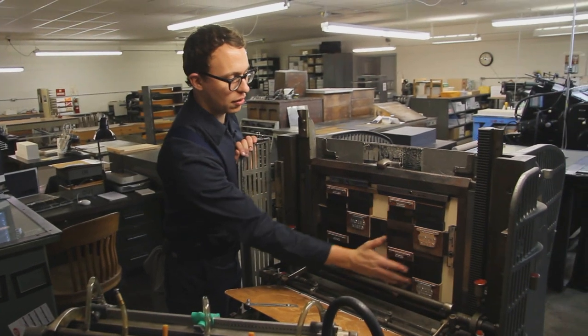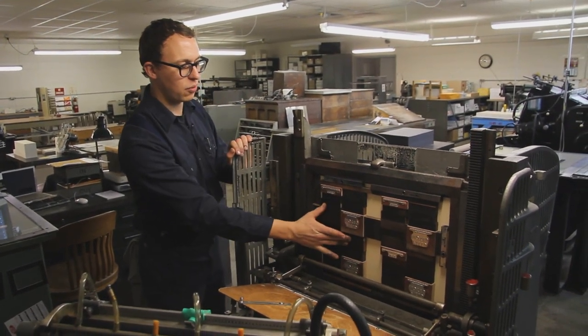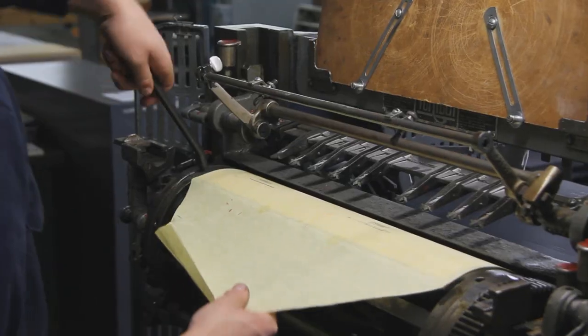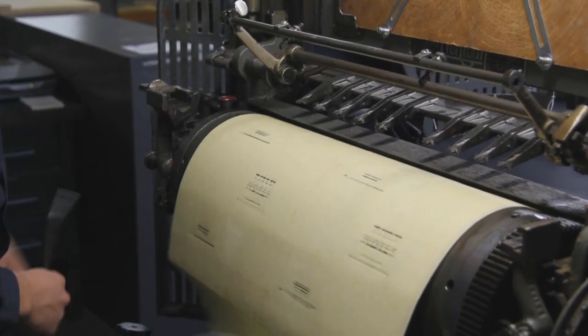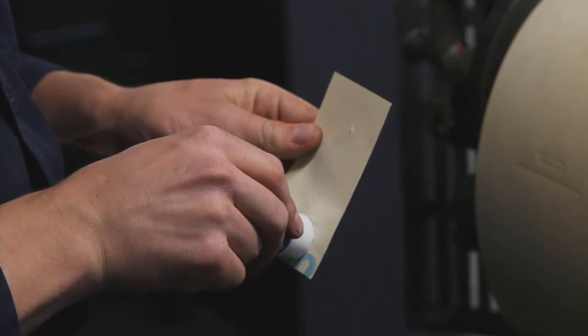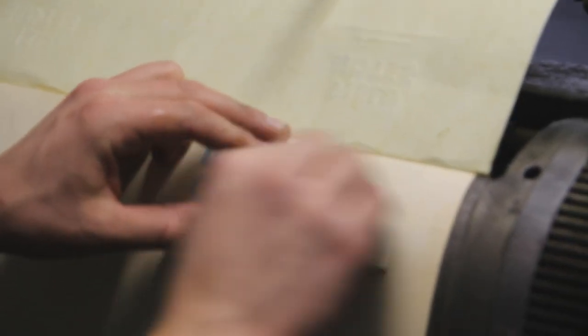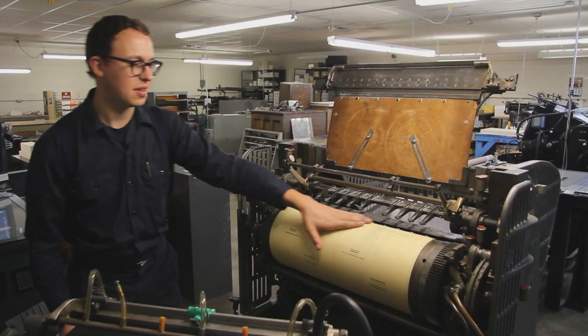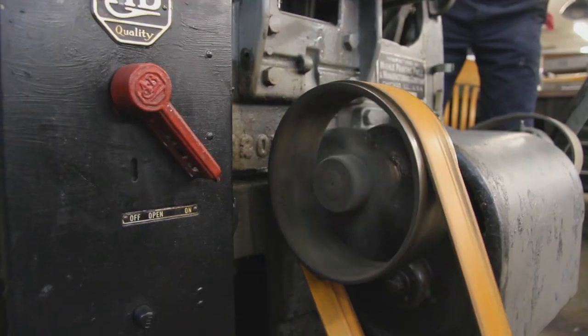You still have the flat chase form, it's locked up. But the paper is running around a cylinder. Instead of on a platen press, like a Heidelberg windmill or a Chandler Price, this is more like a Vander Cook. This is exactly what a Vander Cook is.